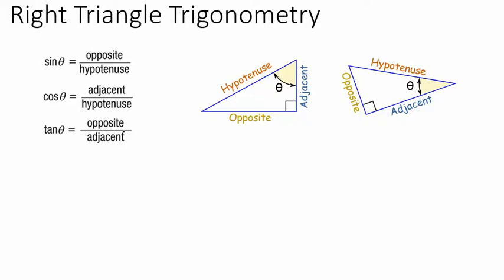Let's look at the variables in the formula. This little symbol that looks like a circle with a line through it is a Greek letter — it's pronounced theta — and that's going to represent the angle. Then we have three sides: opposite, hypotenuse, and adjacent.